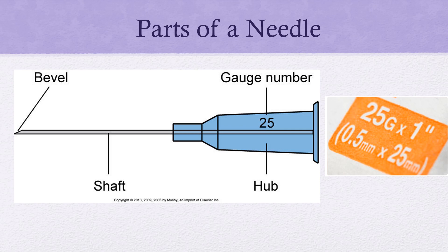Most of these needles will come pre-packaged with a syringe, but sometimes they come individually packaged, which does allow you to choose a different needle size or gauge.